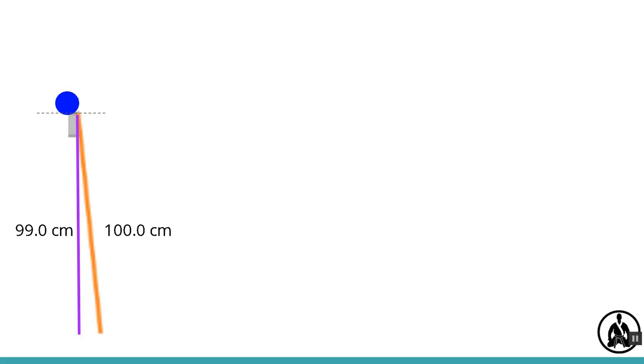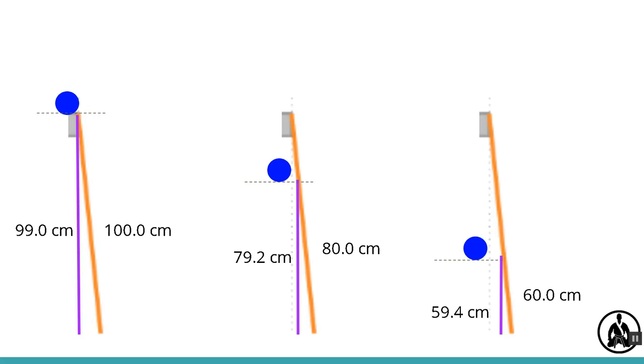Now all our height measurements will be a little bit too big. If we realize our mistake, we can do a little bit of maths and work out the errors and then correct our results table. So this type of error is predictable once you know it's there.